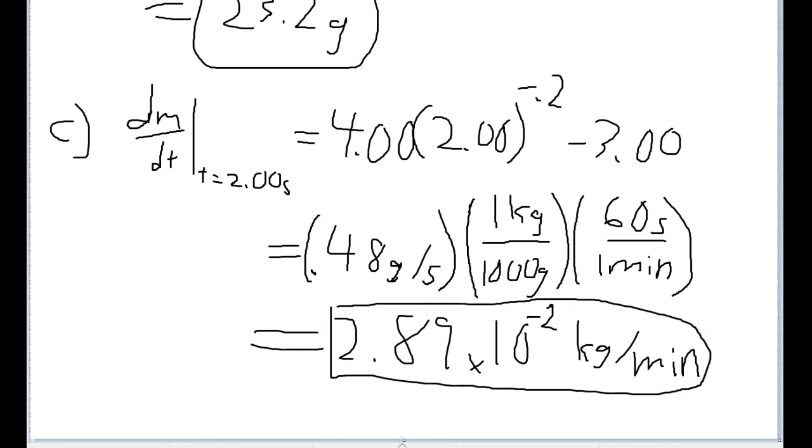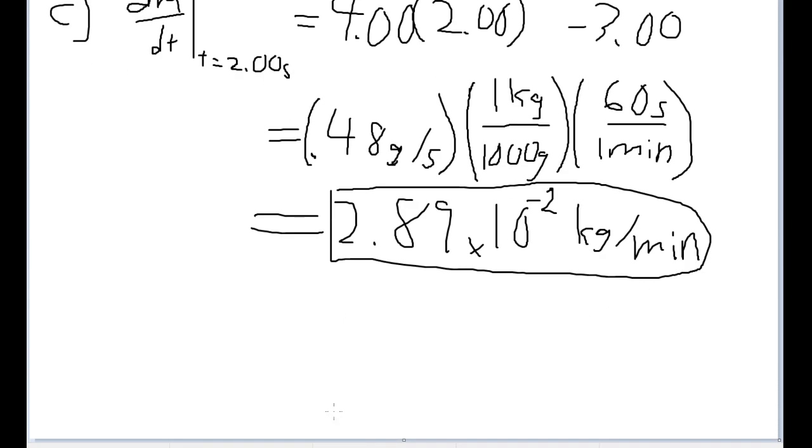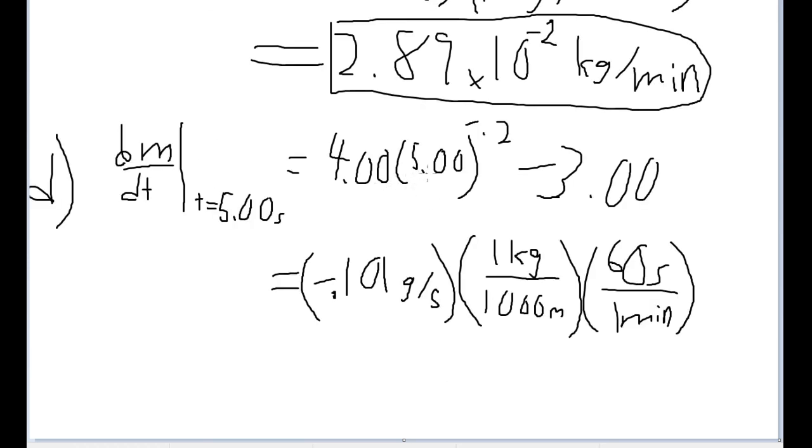Now Part D is pretty similar, it's basically asking the exact same thing as Part C, only now we are asked to use a time value of 5.00 seconds. So I'm going to write out that calculation as well. So once again, I've plugged in the time value for 5 seconds into the formula here as I wrote out. And we get negative 0.101 grams per second.